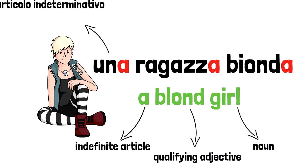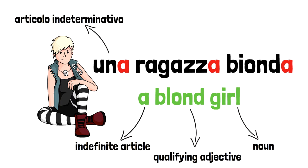In Italian we say Una ragazza bionda. Let's see what each of these words are. Una is the indefinite article, l'articolo indeterminativo. Ragazza is the noun, il nome. And bionda is the qualifying adjective, l'aggettivo qualificativo.